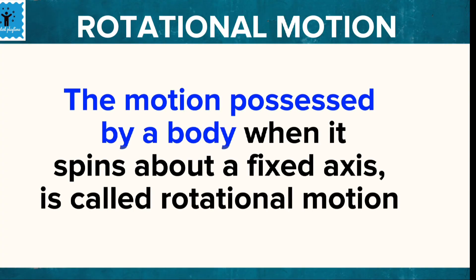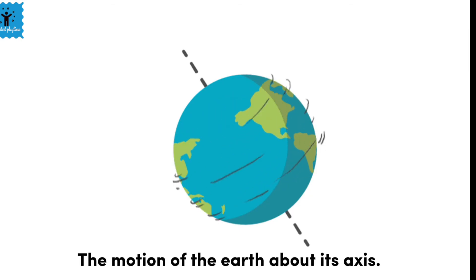If a body spins around on its fixed axis, that motion is known as rotational motion. For example, the motion of the earth on its axis is an example of rotational motion.